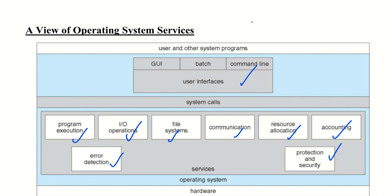User interface means the way you communicate with an operating system. There are different types of interfaces such as graphical user interface, command line interface, and batch interface. Almost all operating systems have a user interface — various command line interfaces and graphical user interfaces.